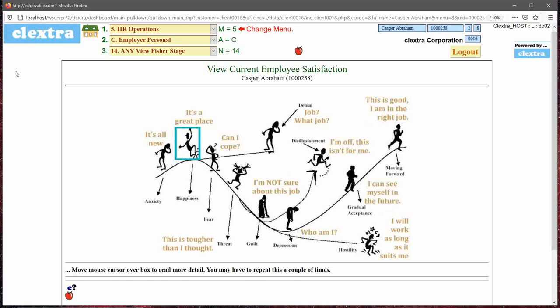The key part is that there are about six or seven stages which lead from the beginning of the curve to an upward curve. If you know where that person is, in this particular example that you're seeing, this person is at level two—it's a great place. The person perceives it as a great place.